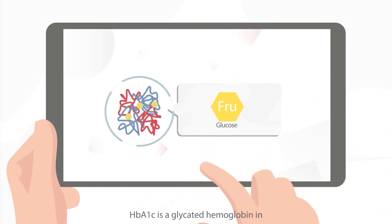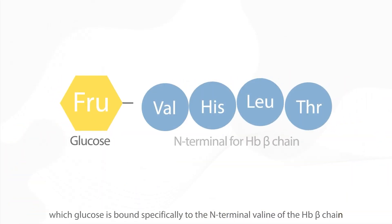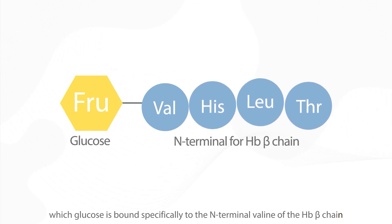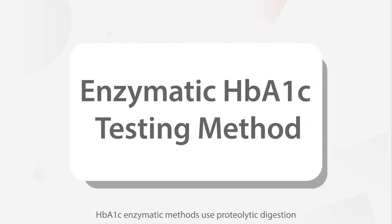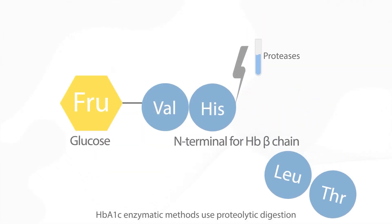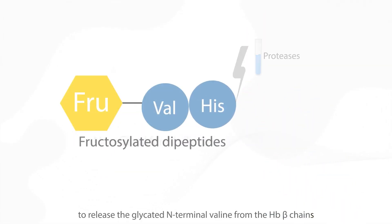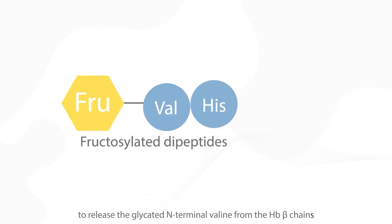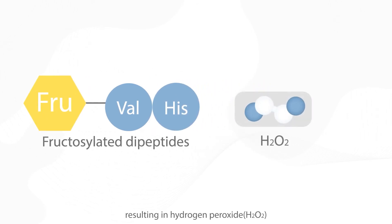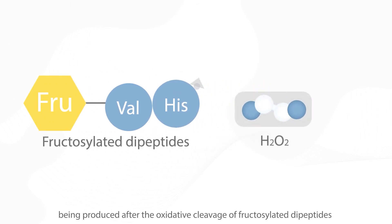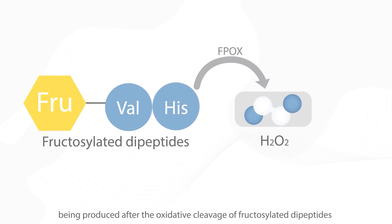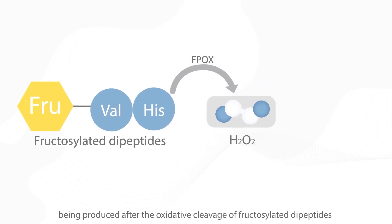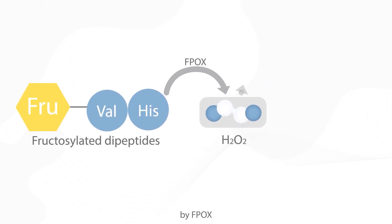HbA1c is a glycated hemoglobin in which glucose is bound specifically to the N-terminal valine of the hemoglobin beta chain. HbA1c enzymatic methods use proteolytic digestion to release the glycated N-terminal valine from the hemoglobin beta chains, resulting in hydrogen peroxide being produced after the oxidative cleavage of fructosylated dipeptides by F-POX.